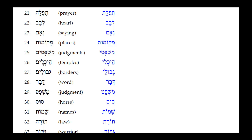Number twenty-four: Hechalim — masculine plural for temples. The Hirik Yod Mem Sofit drops off, the Seri Yod takes its place, and the Kamets under the Khet reduces to a simple Sheva. Result: Hekhalei.